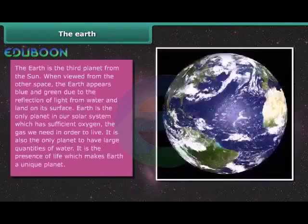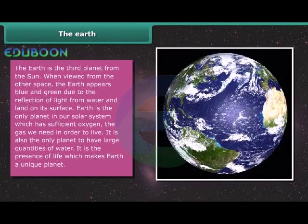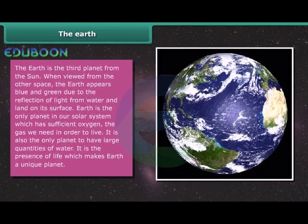Earth is the third planet from the Sun. When viewed from outer space, the Earth appears blue and green due to the reflection of light from water and land on its surface. Earth is the only planet in our solar system which has sufficient oxygen, the gas we need in order to live. It is also the only planet to have large quantities of water. It is the presence of life which makes Earth a unique planet.